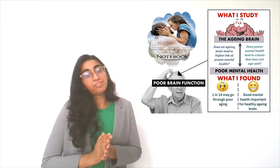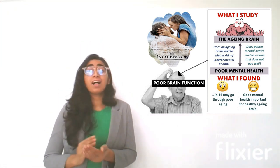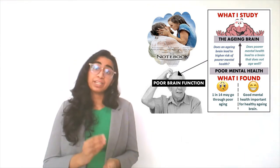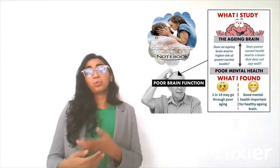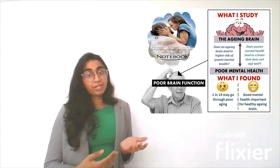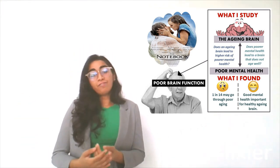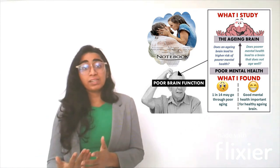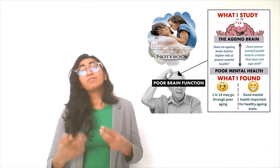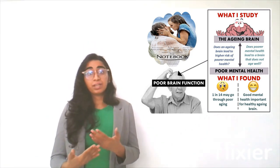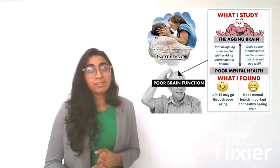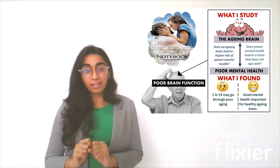My PhD research focuses on the mental health aspect of unhealthy brain aging. Basically, I want to know which comes first, unhealthy brain aging or mental health issues. So far, I've found that 1 in 14 of our older adult population suffers from unhealthy brain aging. I also found that poor mental health can lead to unhealthy brain aging.